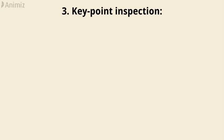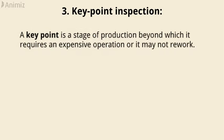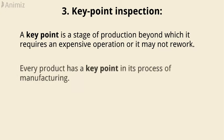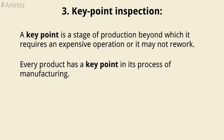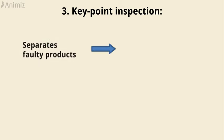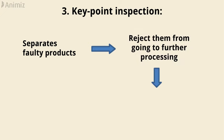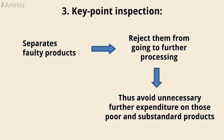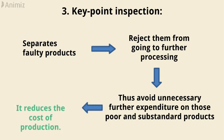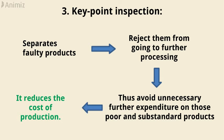Key point inspection: A key point is a stage of production beyond which it requires an expensive operation, or it may not be reworked. Every product has a key point in its process of manufacturing. Inspection at key points separates faulty products and rejects them from going to further processing, thus avoiding unnecessary expenditure on those poor and substandard products. It reduces the cost of production.